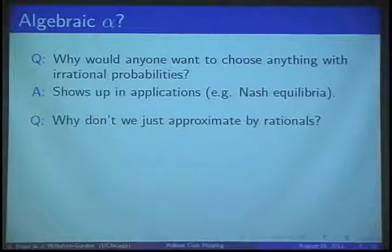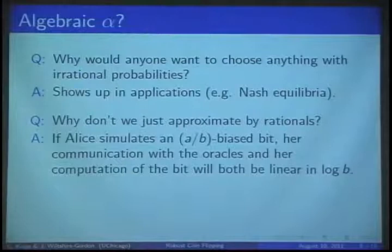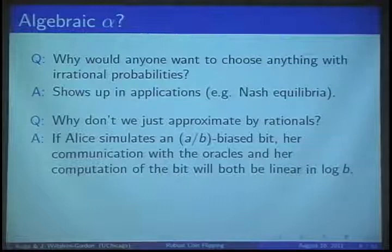But why can't we just approximate alpha by rational numbers? Well, Alice being in the jungle with nothing but a flamingo and a cell phone, her computational powers may be limited, whereas the laboratories she calls may have more power at their disposal. Our solution provides a constant-time algorithm for Alice.